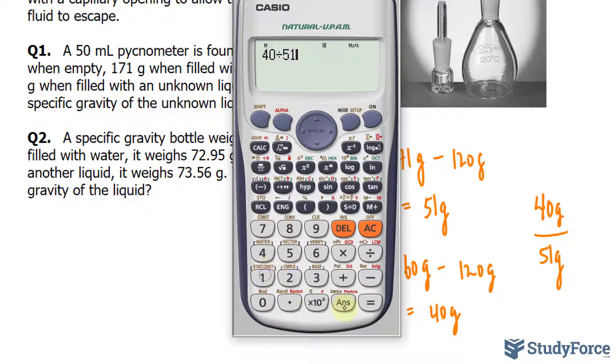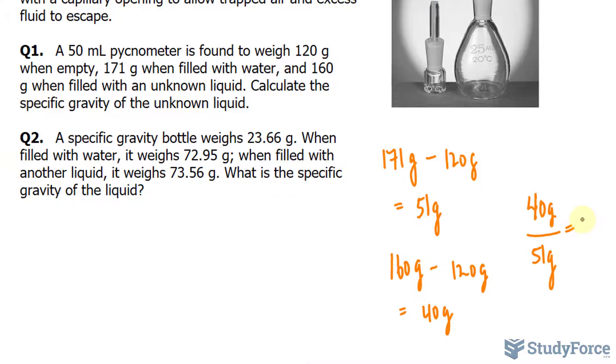40 divided by 51 gives us an answer that is 0.7843. Now since both of these values have two significant figures, we'll make sure that our answer is rounded to two significant figures, which is 0.78.